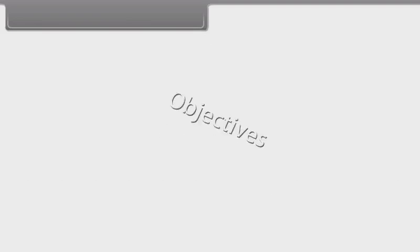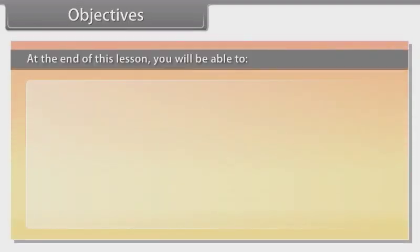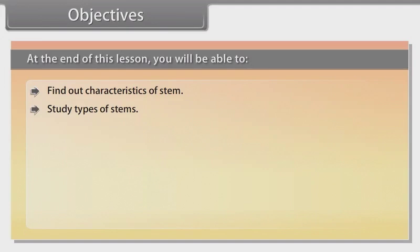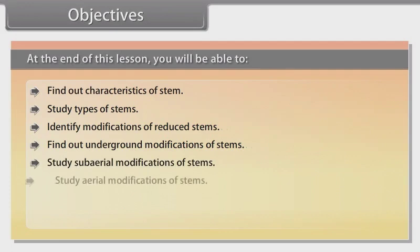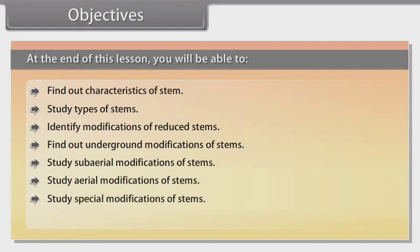At the end of this lesson, you will be able to: find out characteristics of stem; study types of stems; identify modifications of reduced stems; find out underground modifications of stems; study sub-aerial modifications of stems; study aerial modifications of stems; study special modifications of stems; and understand functions of stems.